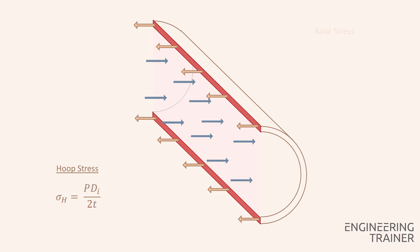Commonly the equation is expressed using the outer diameter instead of the inner diameter. This will always give a higher stress value since the outer diameter is by definition larger than the inner diameter. The resulting equation states that the hoop stress in a pressurized piece of piping is roughly equal to the inside pressure times the pipe outer diameter divided by 2 times the thickness.